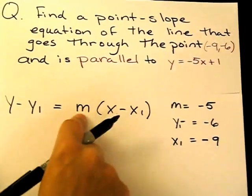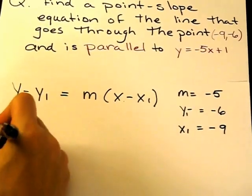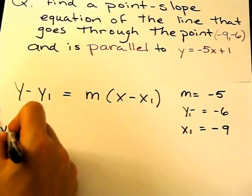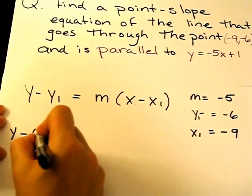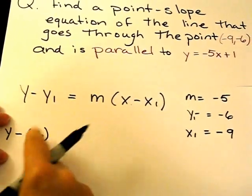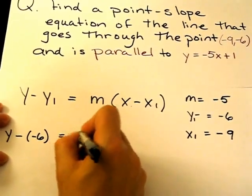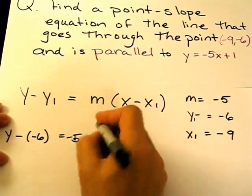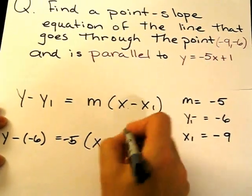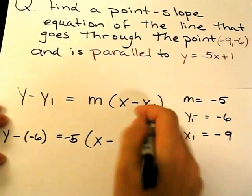Then take this information, plug it into this equation. y - (-6) = -5(x - (-9)).